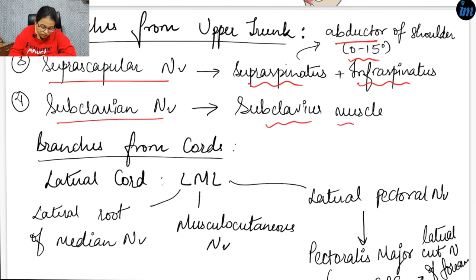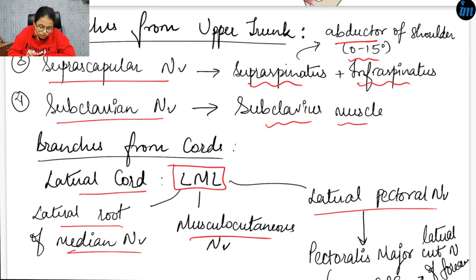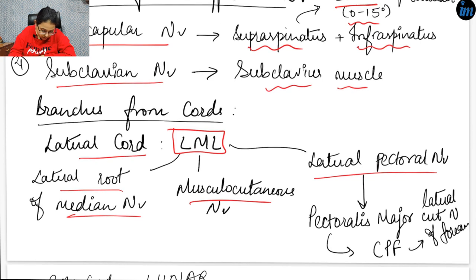Now let's see the branches from the cords. The lateral cord, as you can see, gives musculocutaneous nerve, lateral root of the median nerve, and lateral pectoral nerve — so two major branches and one minor branch. The mnemonic for the lateral cord goes: LML — that is, lateral root of median nerve, musculocutaneous nerve, and lateral pectoral nerve.